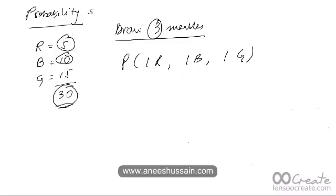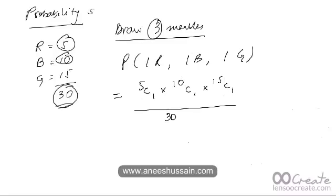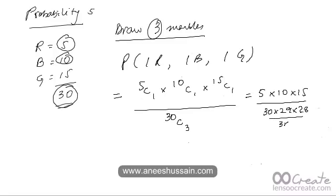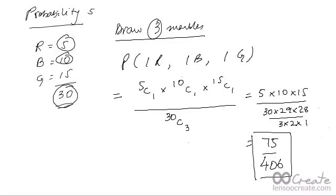The solution is as follows. Probability equals the number of favorable outcomes divided by all possible outcomes. Favorable outcomes: one red from five is 5C1, one blue from ten is 10C1, and one green from fifteen is 15C1. Divide by 30C3 for all possible outcomes. Simplifying: 5 times 10 times 15 divided by 30C3, which is 30 times 29 times 28 over 3 times 2 times 1. The answer is 75 over 406.